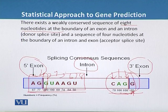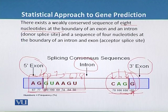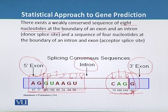Similarly, G has 55% frequency. At the donor splice site all the frequencies of the nucleotides are written below their nucleotides, so these conserved regions we can detect and we can predict the location of the intron and exon junction.